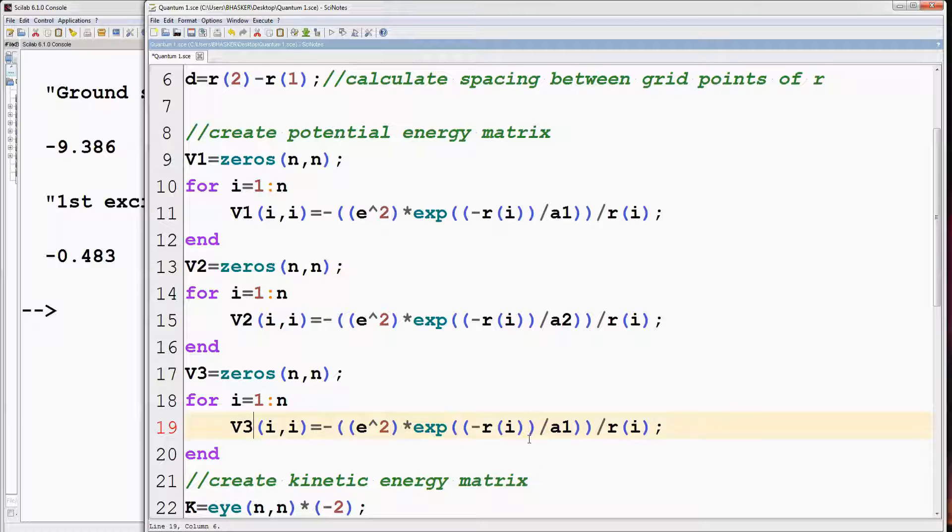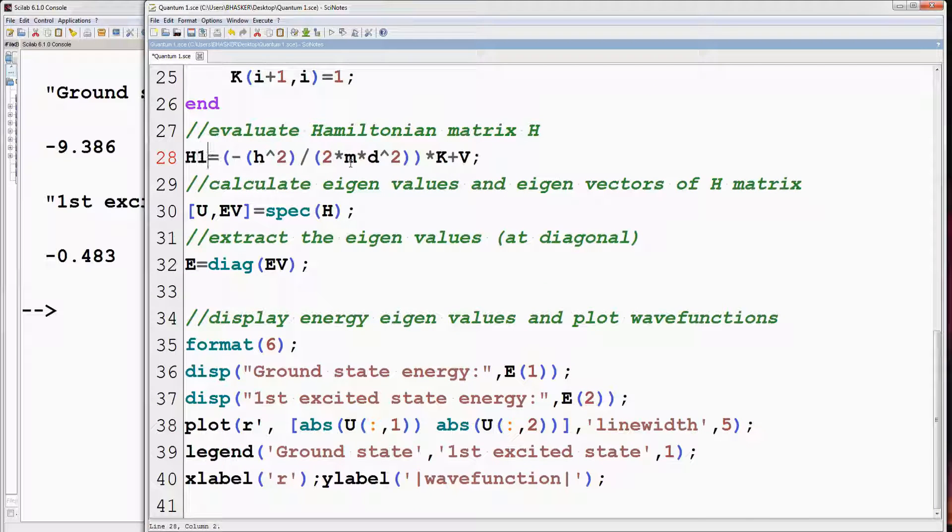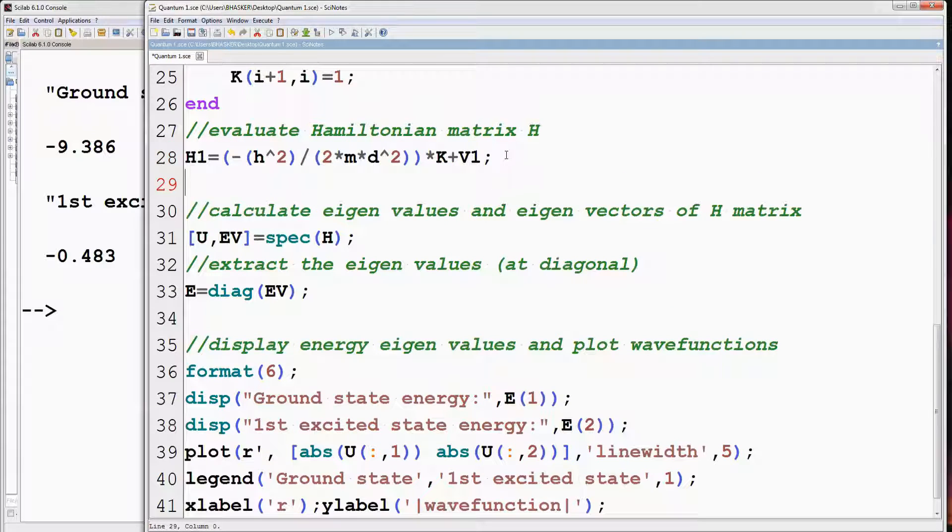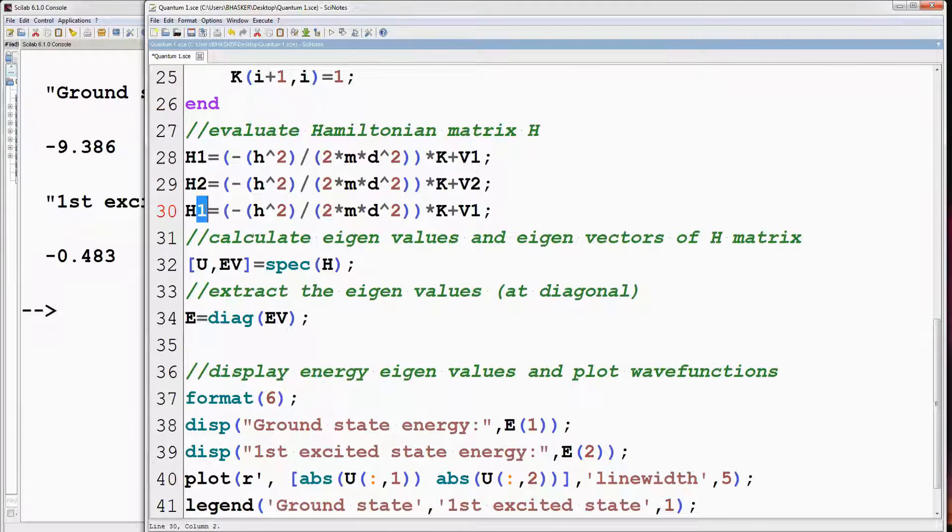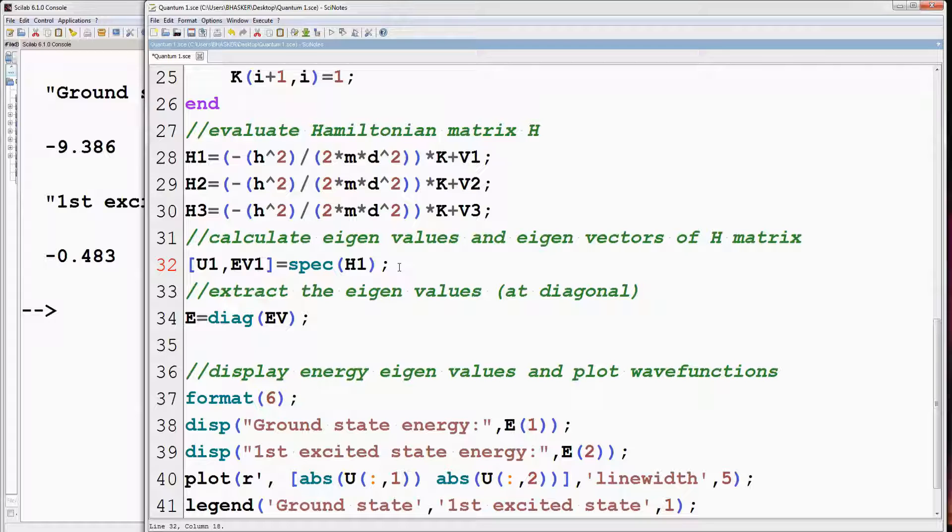Since there are three expressions for potentials v1, v2 and v3, there will be three expressions for Hamiltonian matrix also: h1, h2 and h3. Evaluate eigenvalues and eigenvectors for all three Hamiltonian matrices.